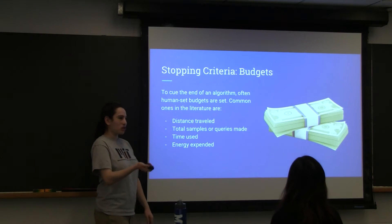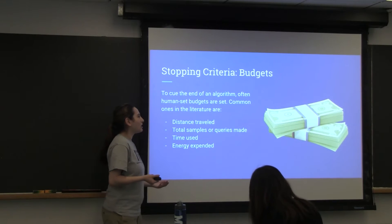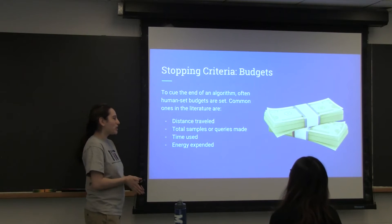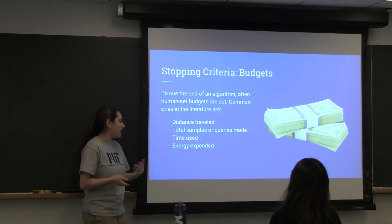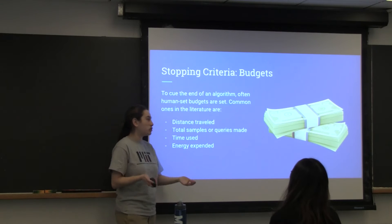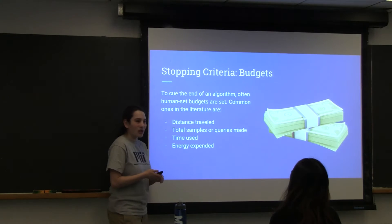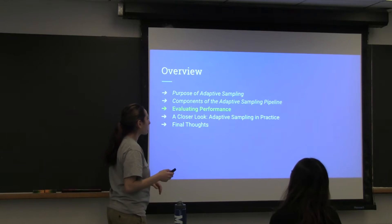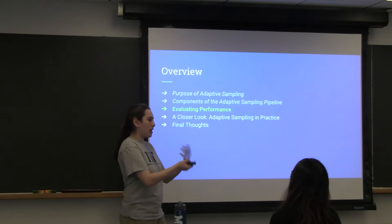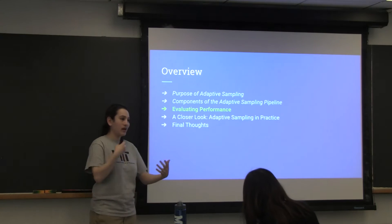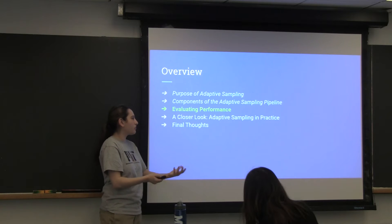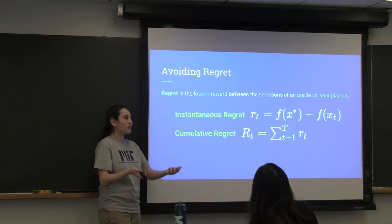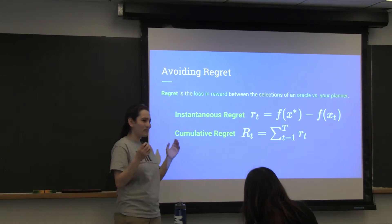The way stopping is usually done is just with a budget. Eventually you're going to run out of resources, and adaptive sampling will need to track those resources and decide that the next action is to go home. The budgets commonly used are: how far do you travel, how many samples do you take, how much time do you use, or what's the total energy expended. You might think there are better stopping criteria, and we'll talk about that, but these are the ones you see in the literature. The way to evaluate your algorithm is typically through regret — though I don't think it's a particularly great metric, it's certainly easy to measure.